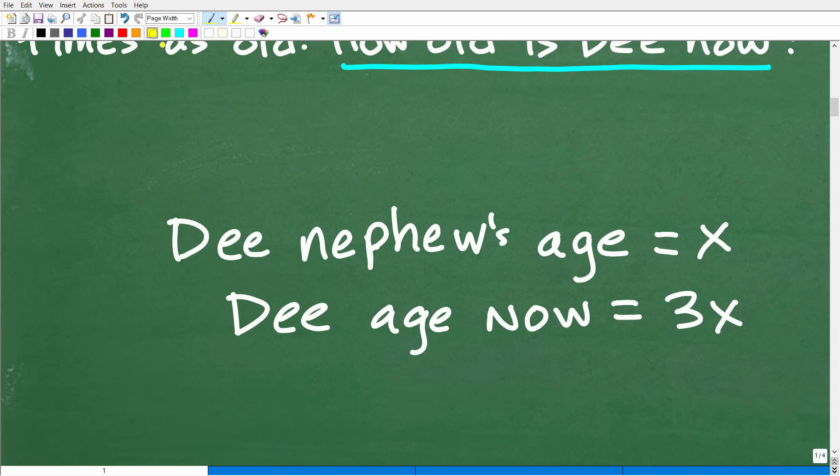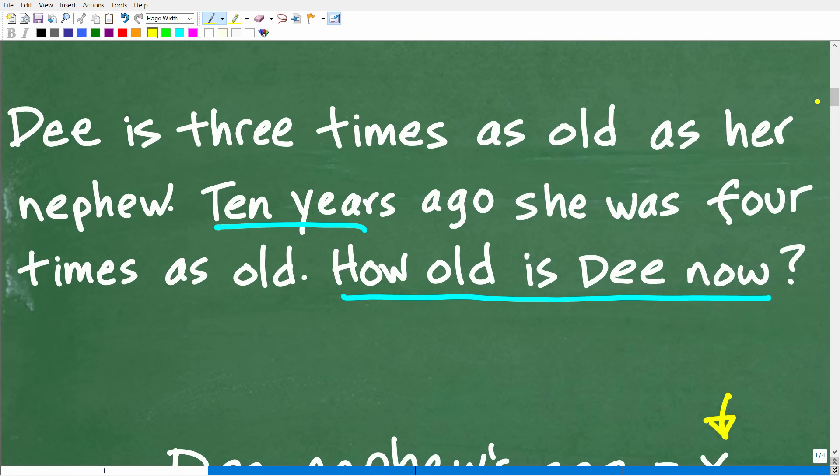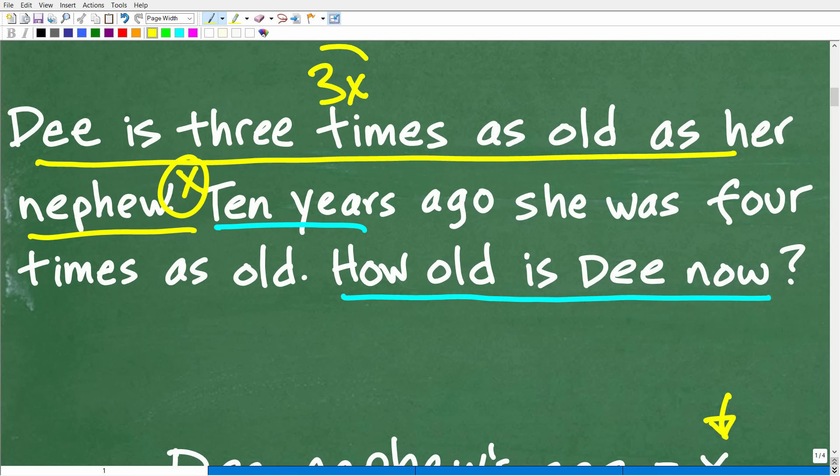All right, so we're going to let X, this variable—and remember in algebra, a variable like X just represents an unknown value—of course, we're looking for both Dee's age, well, we're looking for Dee's age now, but we're also going to end up finding out what the nephew's age is as well. It's just part of the problem. So we'll let X equal Dee's nephew's age right now. Okay, so if Dee's nephew's age is X, then Dee's age right now is 3X. Now, why is that? Because currently Dee is three times as old as her nephew. So if her nephew is X years old, then her age is 3X.